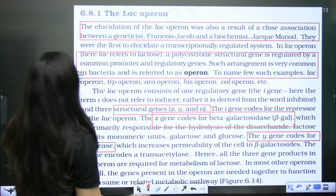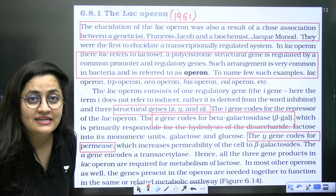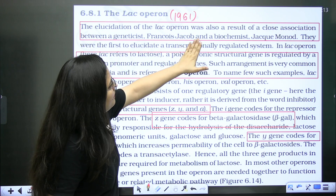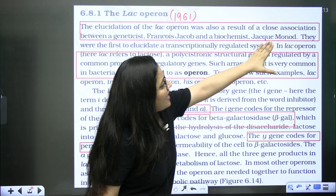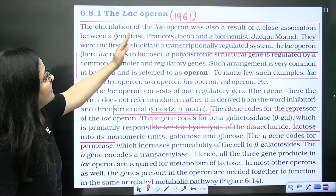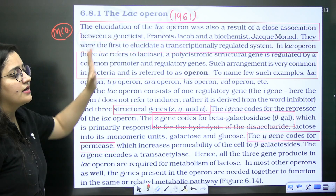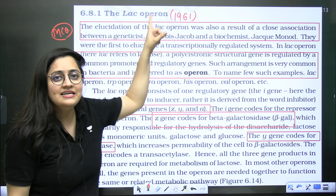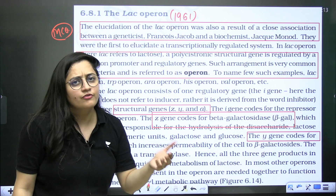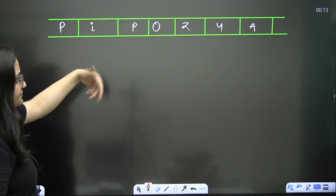Directly from your NCERT: in 1961, François Jacob and biochemist Jacques Monod elucidated the lac operon — this is a previous year question. Please take note: in 1961, Jacob and Monod elucidated the lac operon in the case of E. coli.